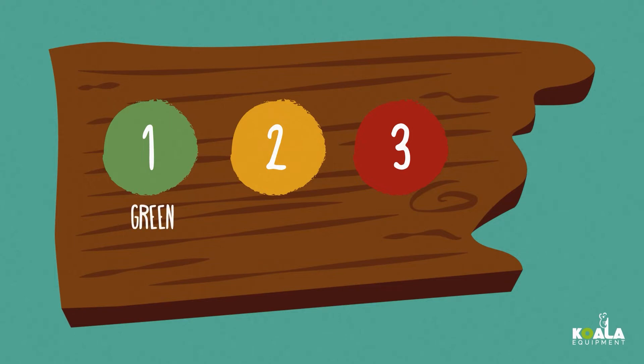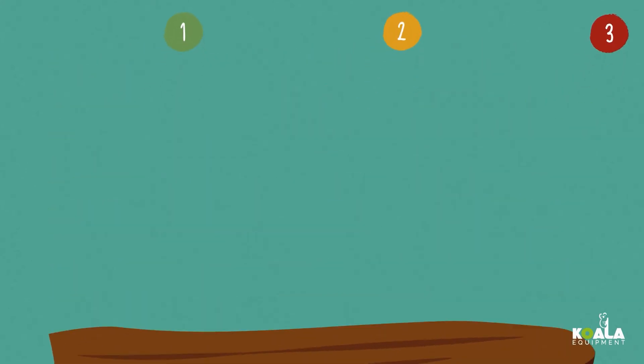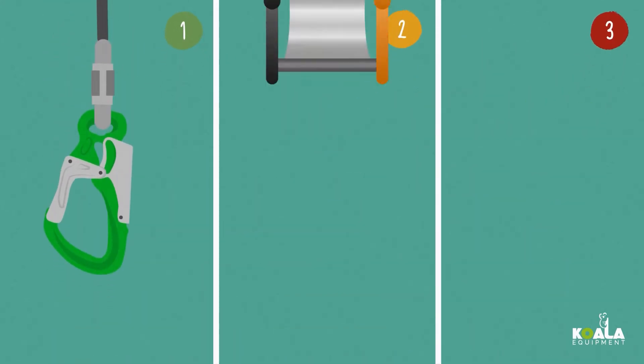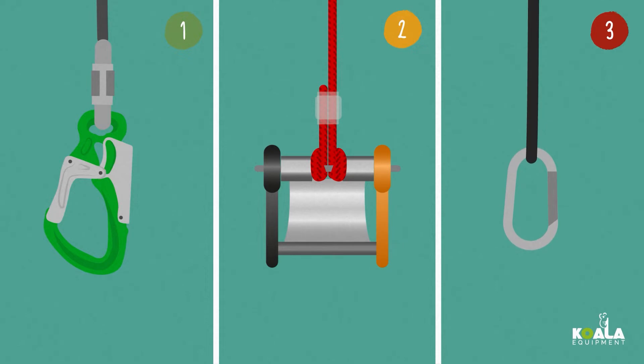1. Green. 2. Black or orange. 3. Red. These activities require a three-step belay system, which we will now see together.